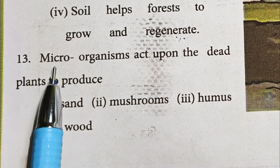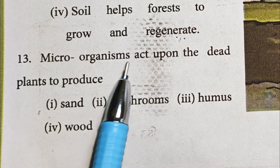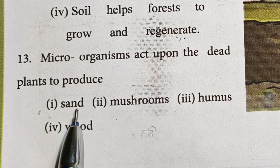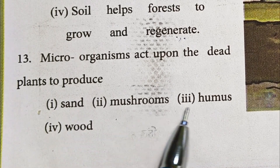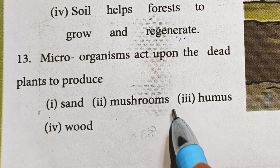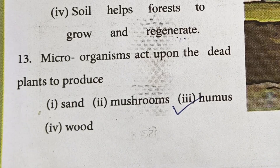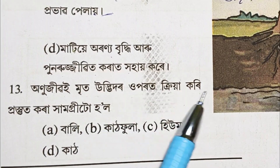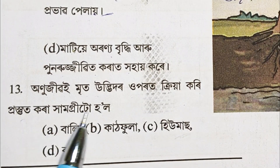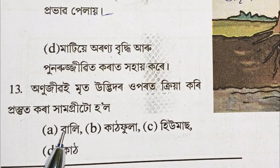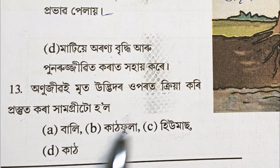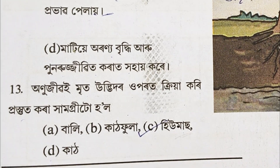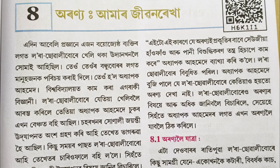Question number 13: Microorganisms act upon the dead plant to produce — sand, mushrooms, humus, or wood? The answer is humus. Microorganisms act upon dead plants and animals to produce humus.